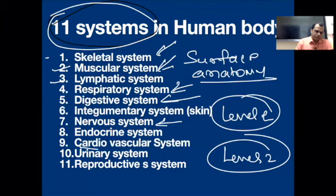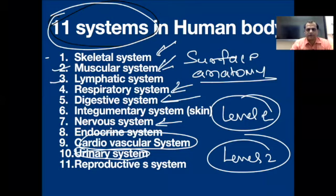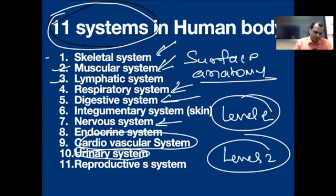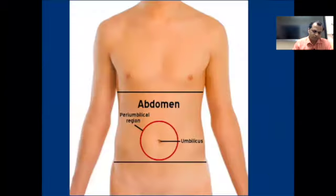The cardiovascular system is connected with the heart and circulation. The urinary system is connected with urine and diseases of the urinary system. The reproductive system deals with the genital parts and problems of the genital organs. So let's start.